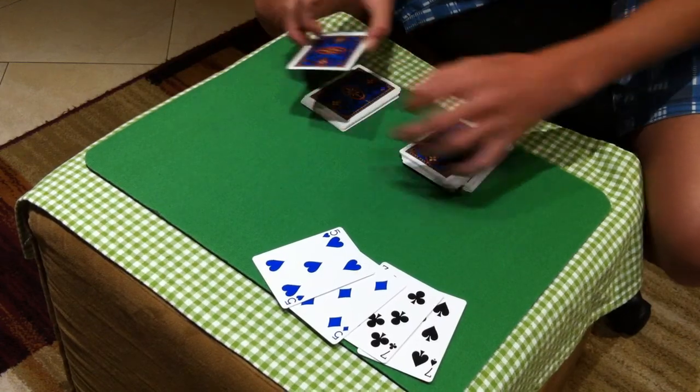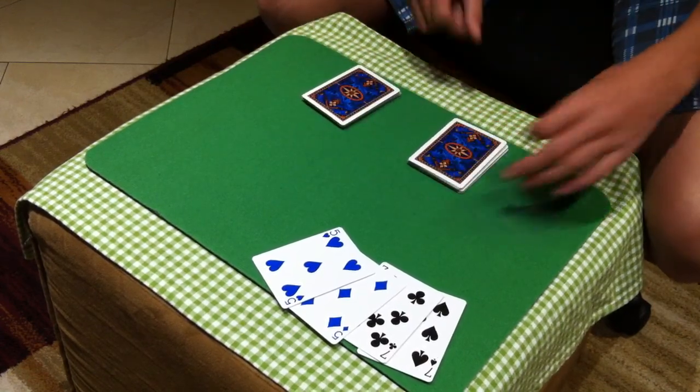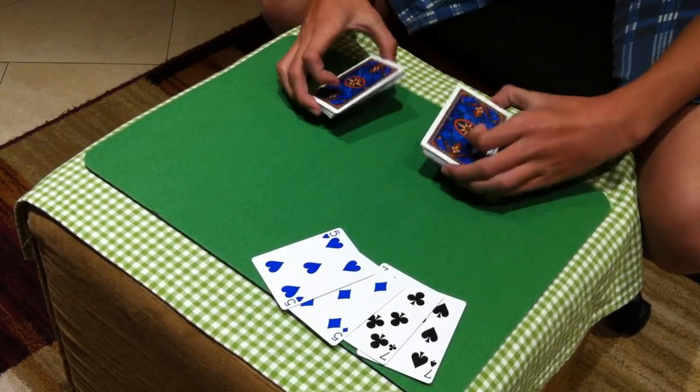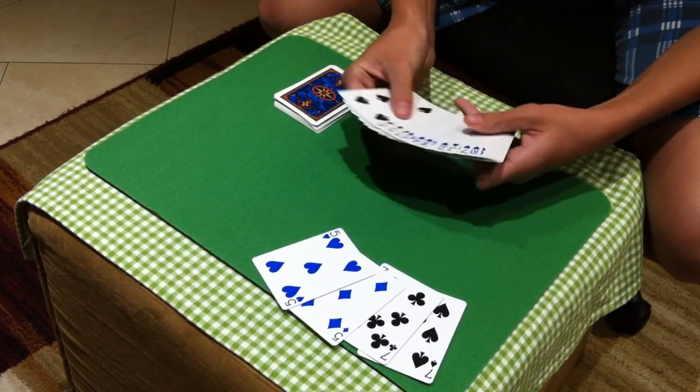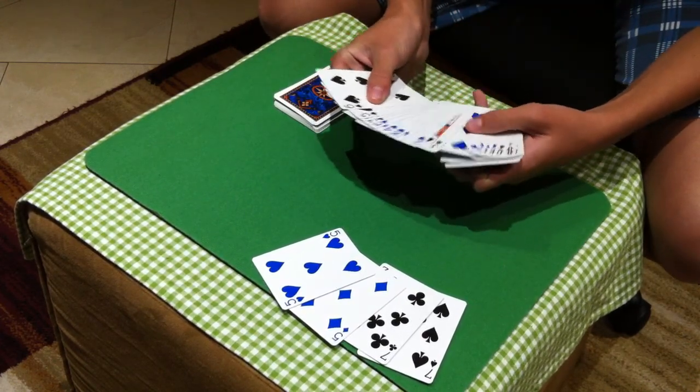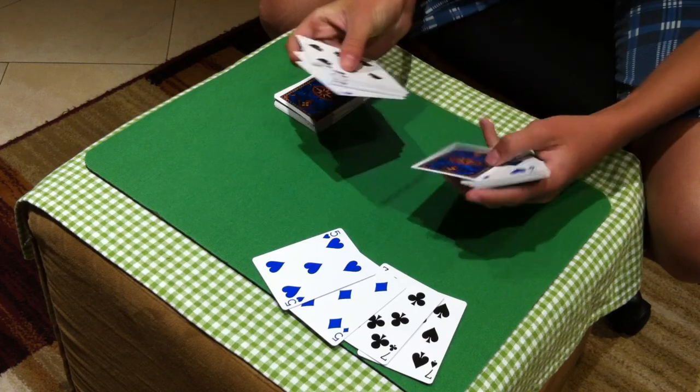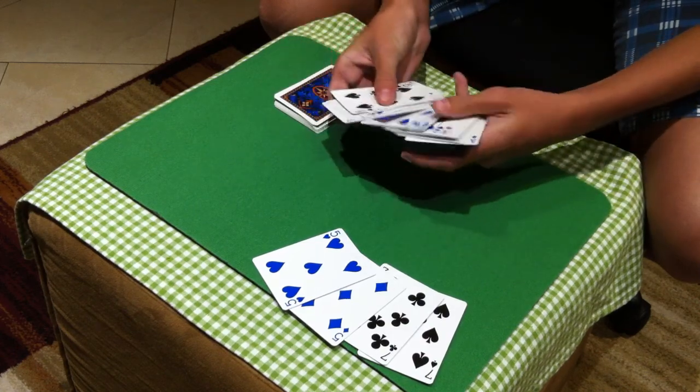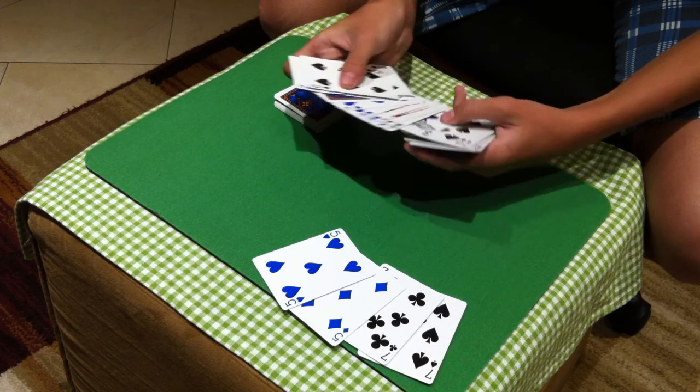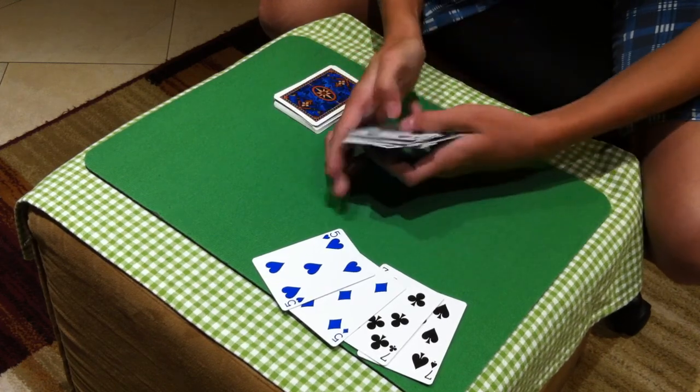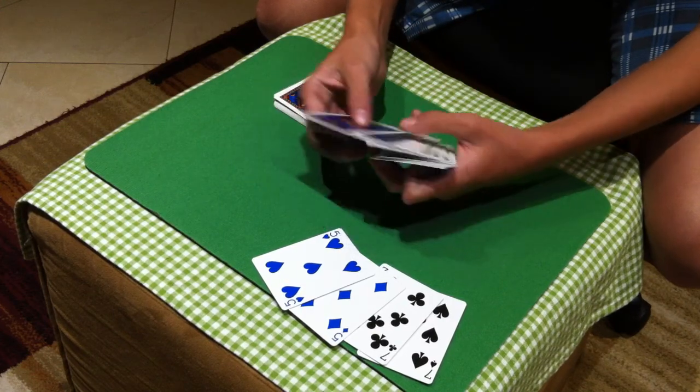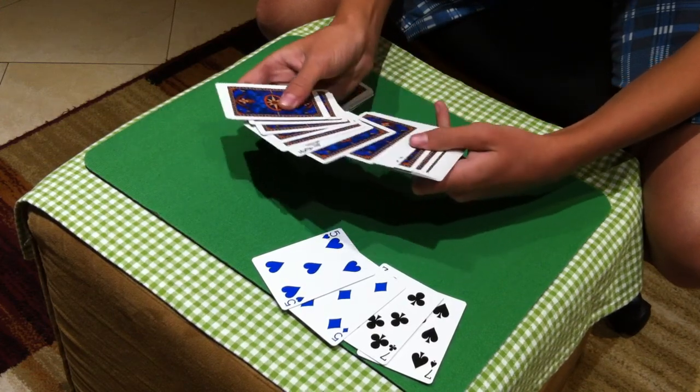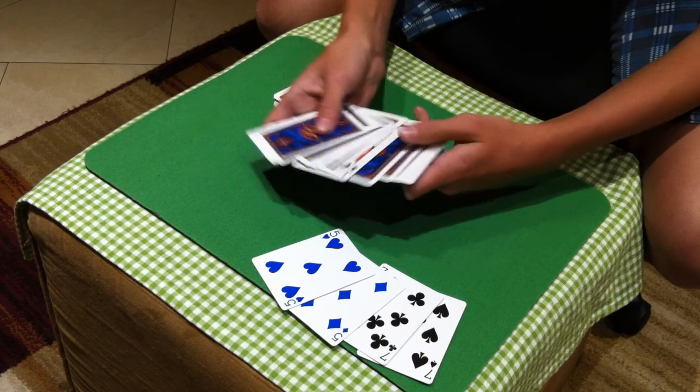Now the last example I can give you is by choosing packets. So let's say they choose this one. And they can go through the pack and turn over any card. So let's say the Jack of Spades and the Joker. Cool. So if I turn over the packet, there is the Joker and there is the Jack of Spades.